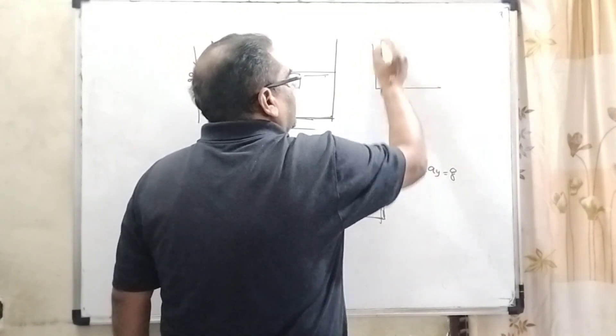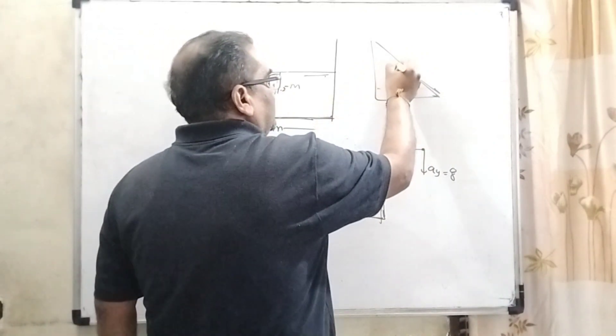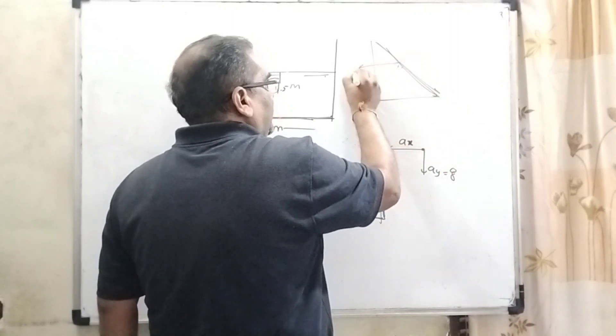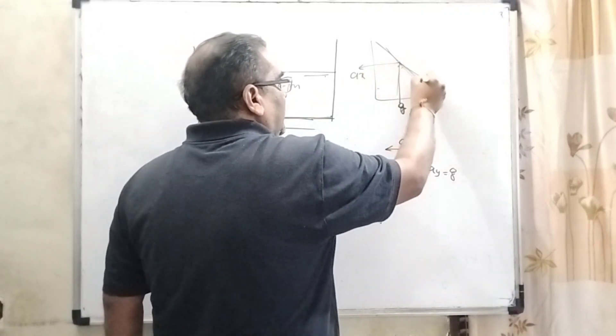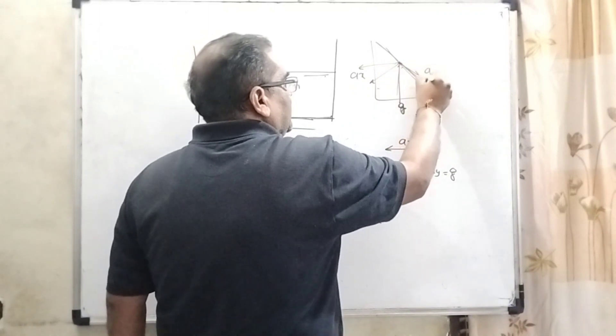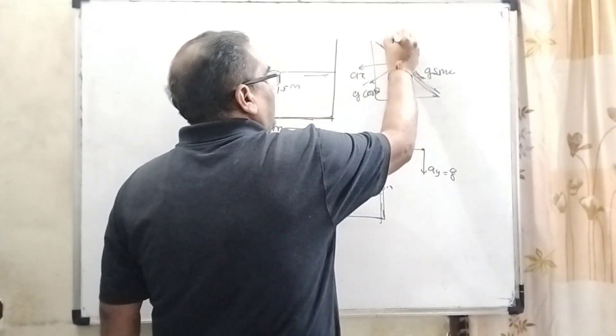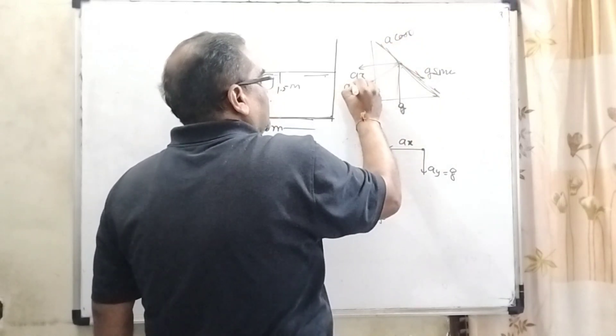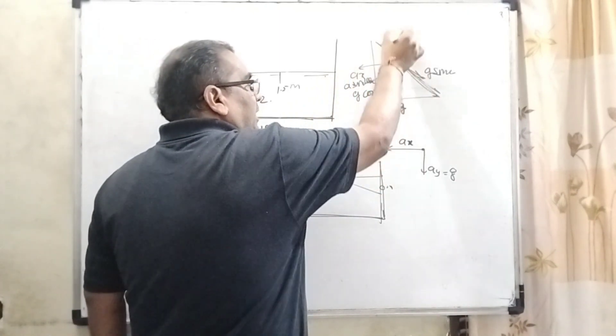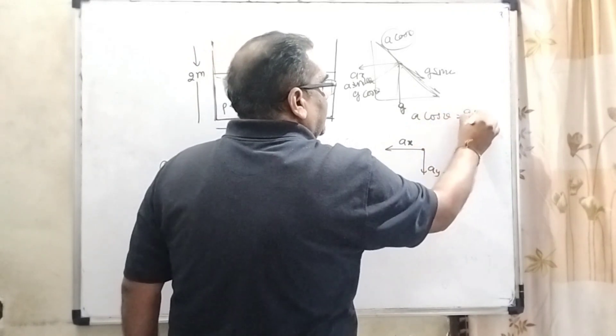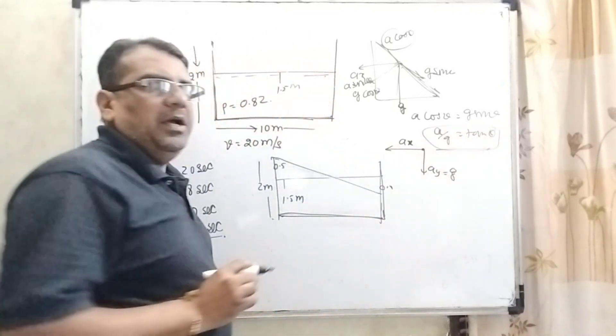If we have to draw this different or separate diagram, then we can see that here this liquid, which is not spilling, it means here Ax acting in this direction. Here G is acting downward direction. So here the component, if we have to divide in two components, that is G sin theta and G cos theta is acting in this direction. Similarly Ay, here A cos theta and A sin theta is acting in this direction. So if this liquid is not spilling, it means this A cos theta is equal to G sin theta. Then A by G is equal to tan theta. Is it okay?